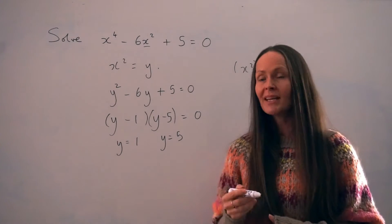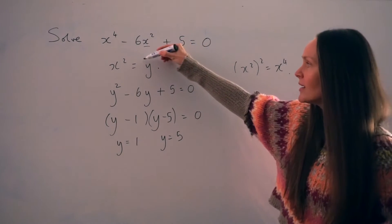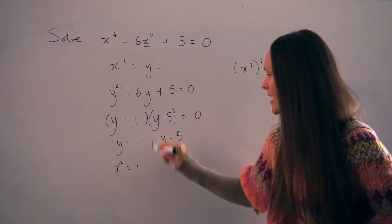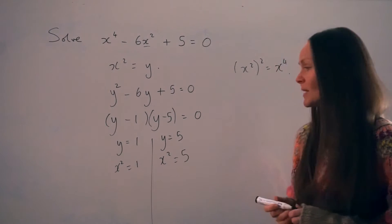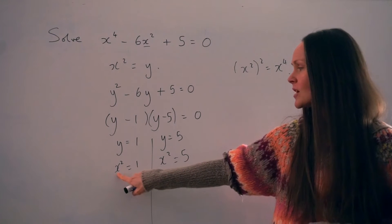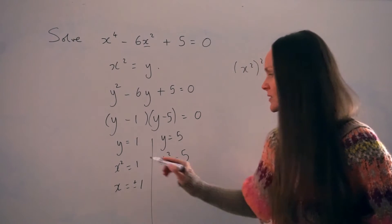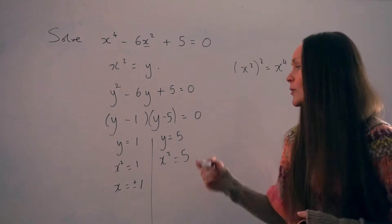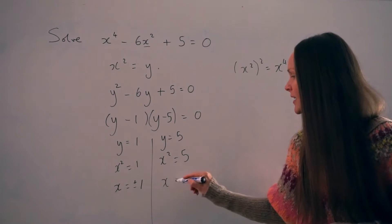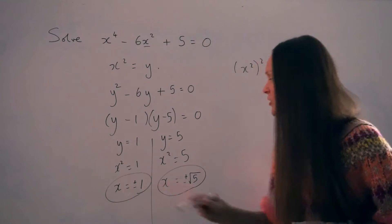We haven't finished. Because we made a substitution at the beginning, we have to make sure we swap back to x squared at the end. Remember, y is equal to x squared, so each y value is actually x squared. There's one step left: the opposite of squaring is to square root. If I square root both sides, I get x equals positive or negative 1, because the square root of 1 is 1. And whenever you're square rooting, you get a positive or negative sign. For the other equation, x is equal to positive or negative root 5, leaving it in exact form. And there are the solutions.